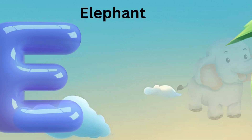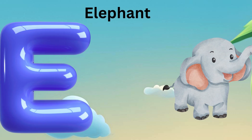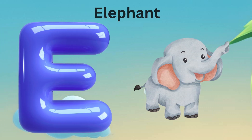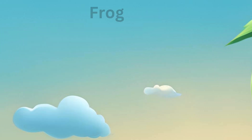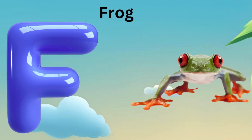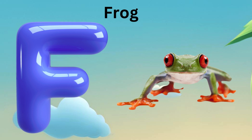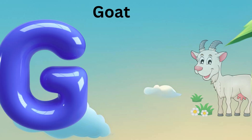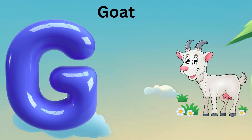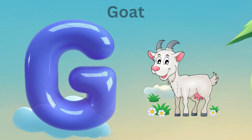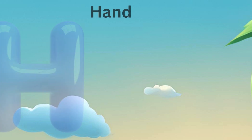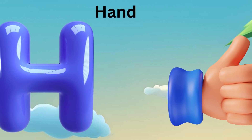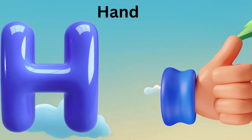E is for Elephant, E-E-Elephant. F is for Fish, F-F-Fish. G is for Godzilla, G-G-Godzilla. H is for Horse, H-H-Horse.